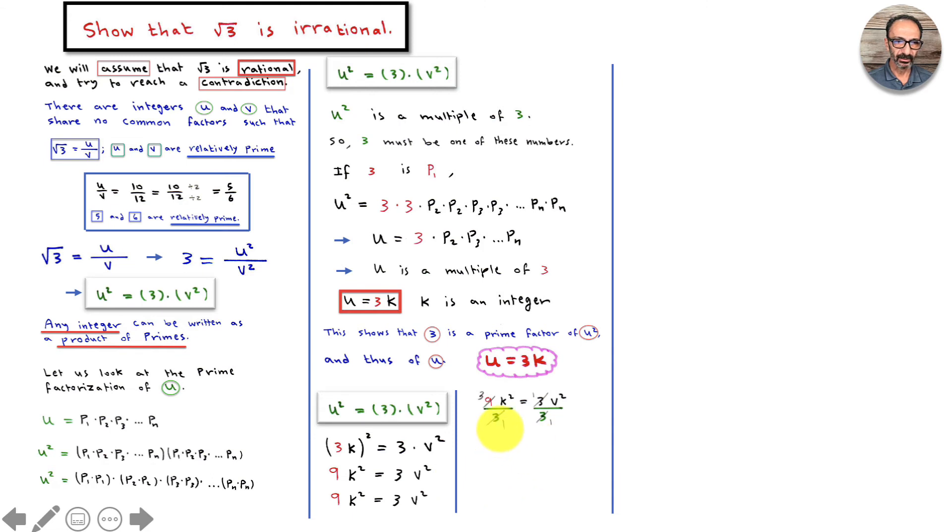Now if you divide both sides by 3, I get the simplest form: 3k squared equals v squared. So let's rearrange this because we want to focus on v squared, or I could say v squared equals 3 times k squared.